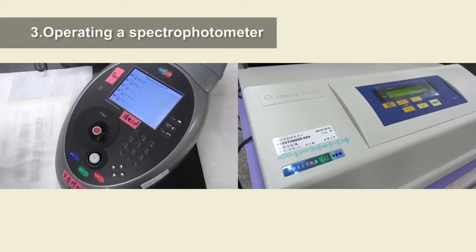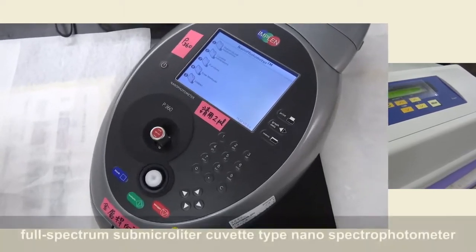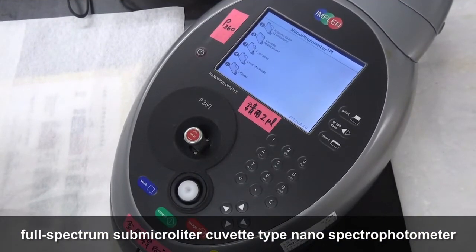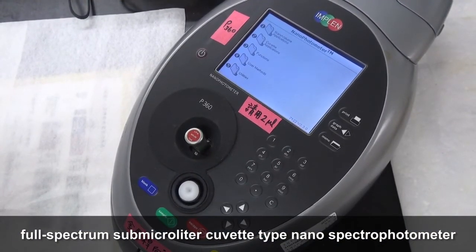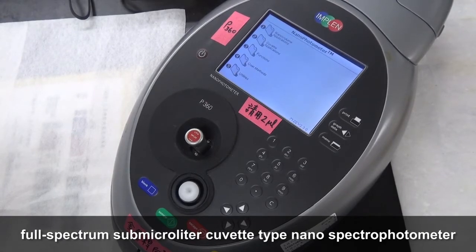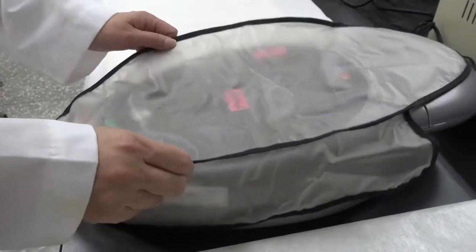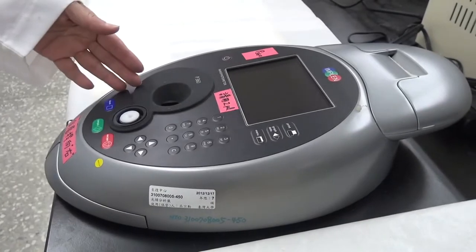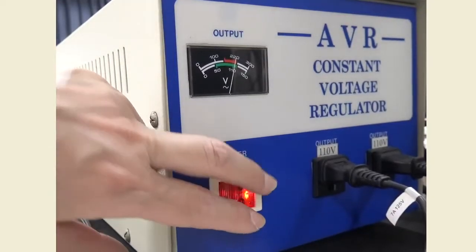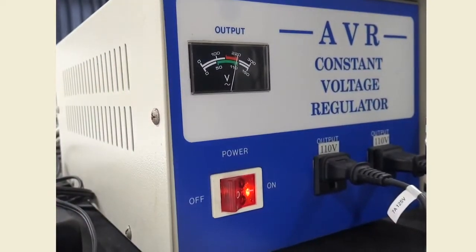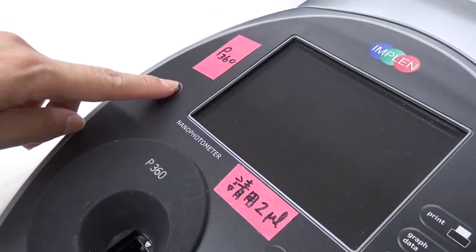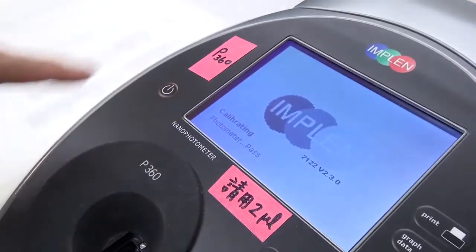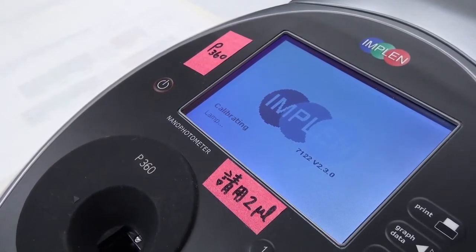3. Operating a spectrophotometer. Now we demonstrate how to operate a full-spectrum, sub-microliter cuvette-type nanospectrophotometer. 1. Remove the dust cover and make sure the cuvette holder is empty. 2. Turn on the uninterruptible power supply, UPS, and switch on the spectrophotometer. The machine starts the self-test procedure automatically.